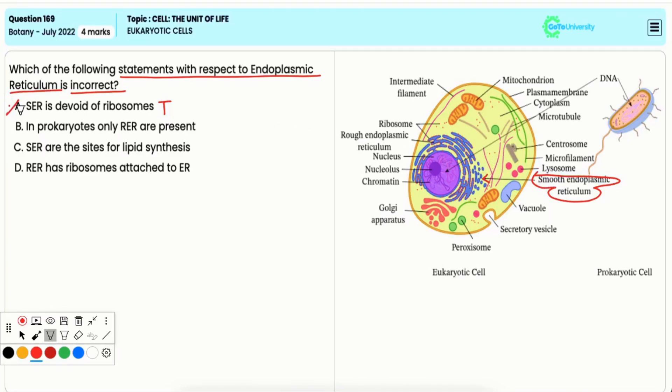Option B: In prokaryotes, only RER are present. Prokaryotes do not have any membrane bound organelles, such as smooth endoplasmic reticulum (SER) or rough endoplasmic reticulum (RER).